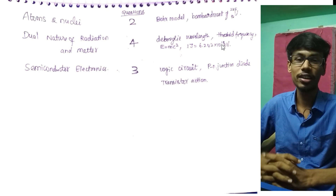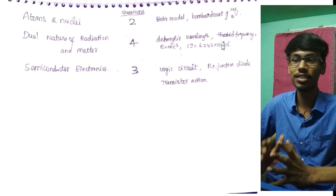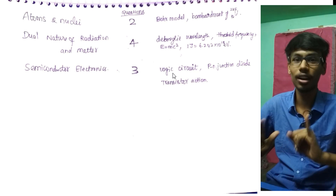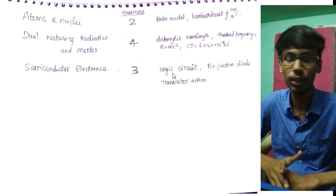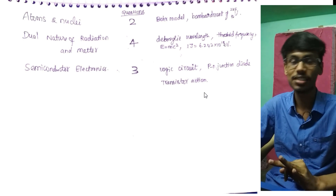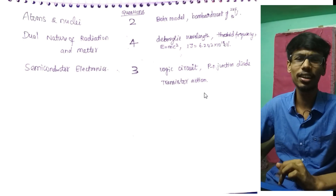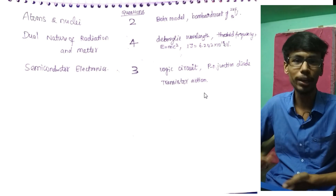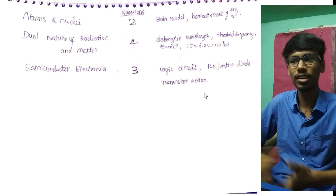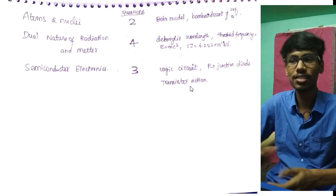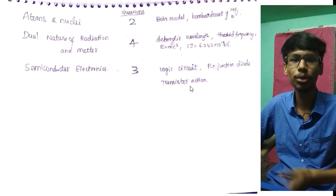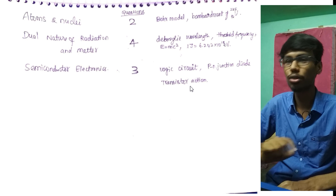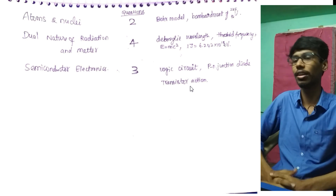Semiconductor Electronics: a very important chapter — three questions in logic circuits. PN junction diode, transistor action — what is the PN junction diode, what are the properties, base, emitter — where is the base, where is the emitter? That's the transistor action. Problem-based questions — just true or false, correct or not.